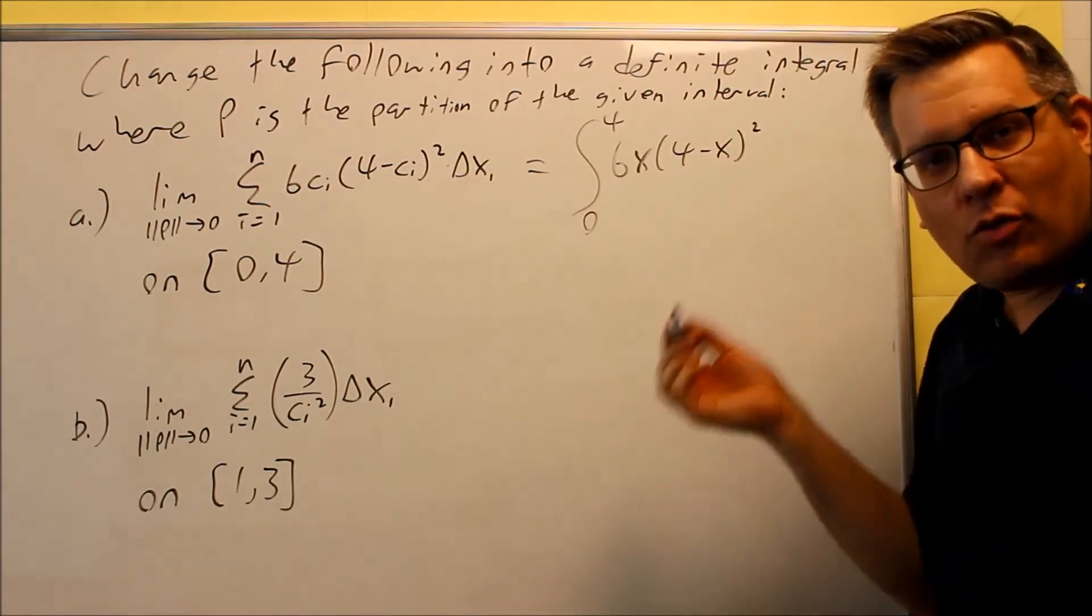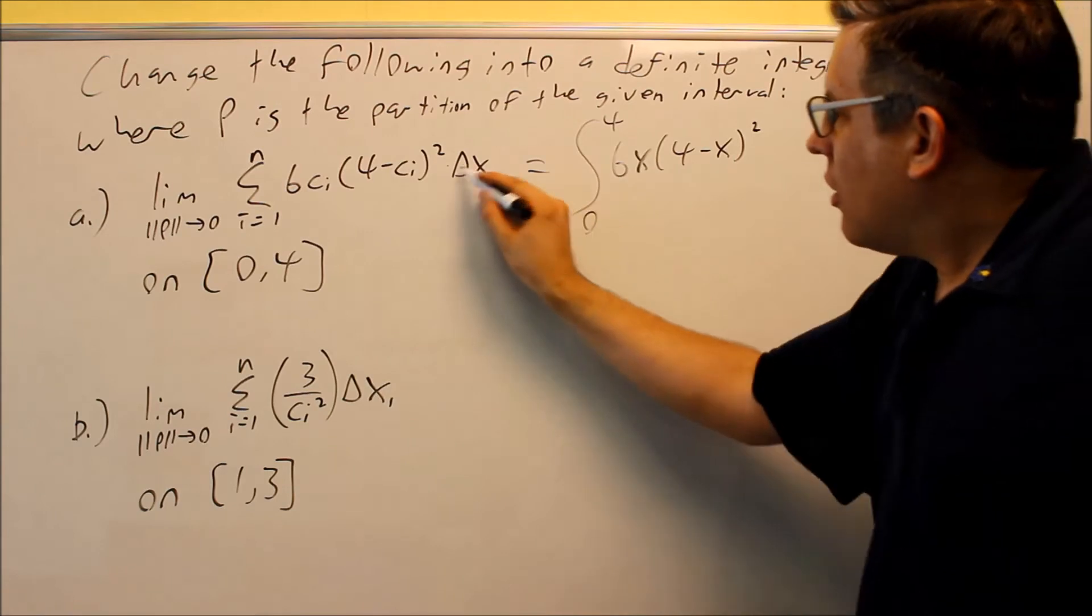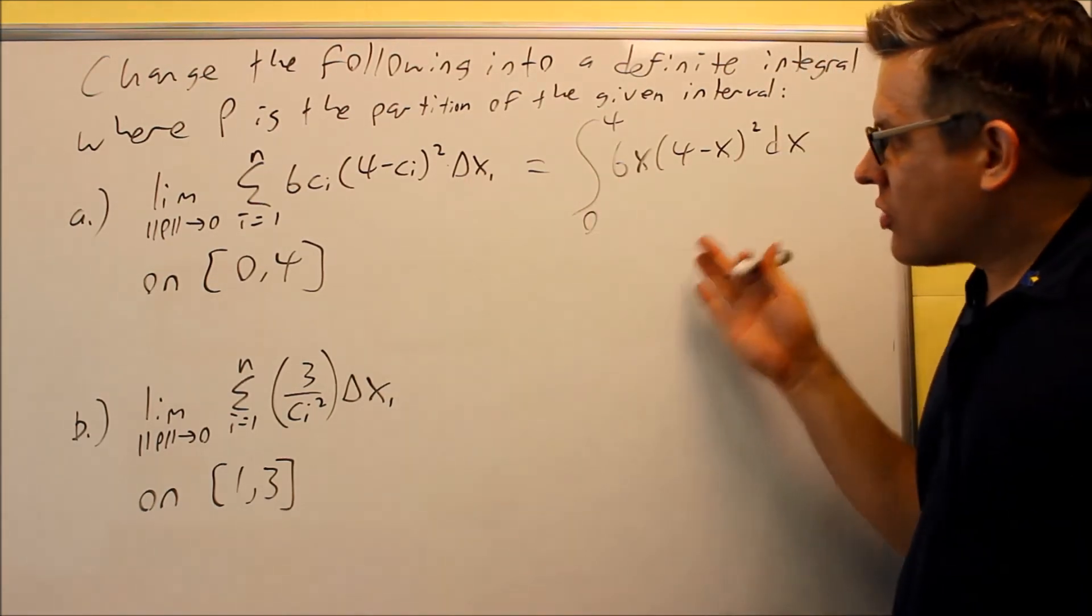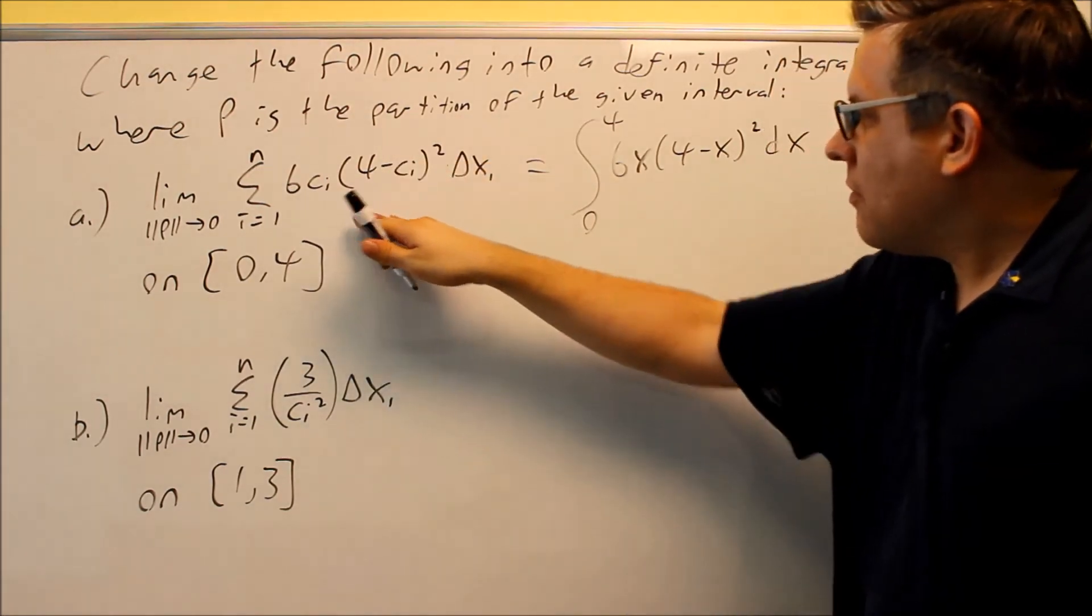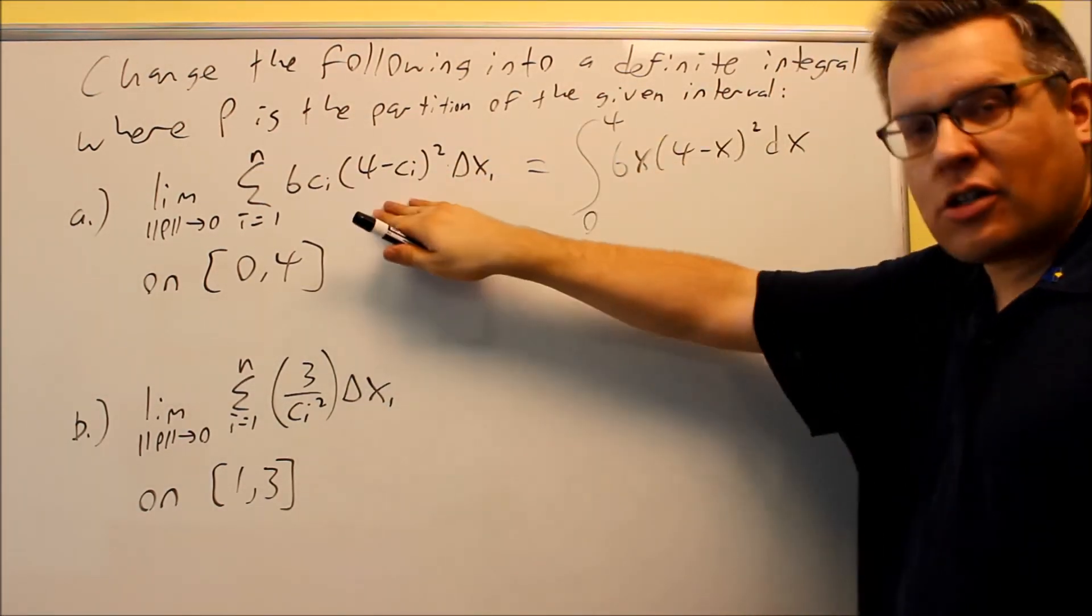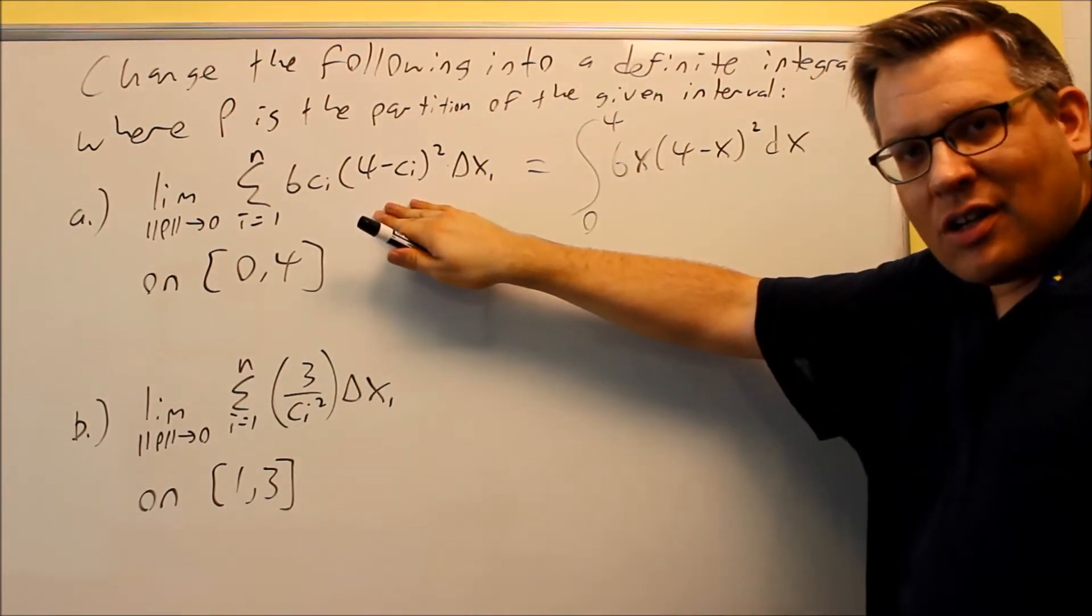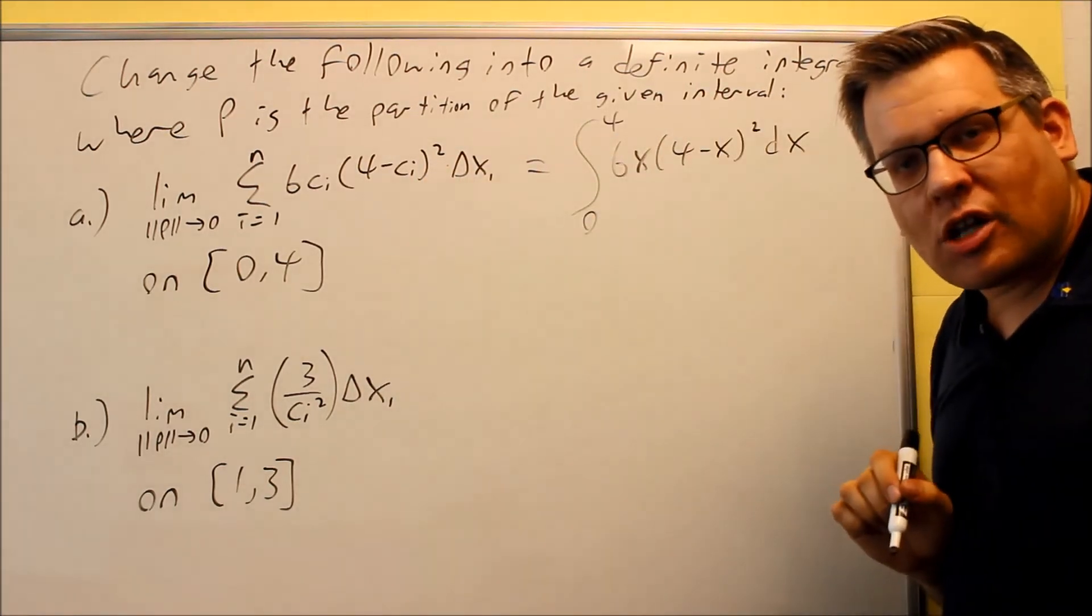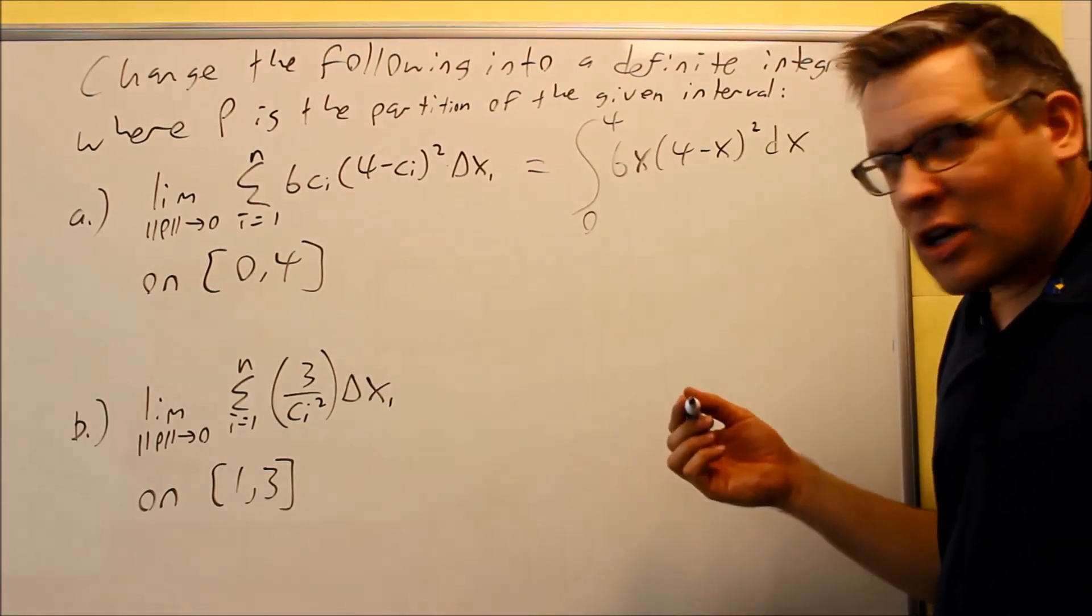Delta x is the same thing as dx. So this whole thing right here means exactly this. You're still calculating areas under a curve, but instead of doing it with limits, we're now going to be moving on and doing it with antiderivatives that we talked about before in the previous session.